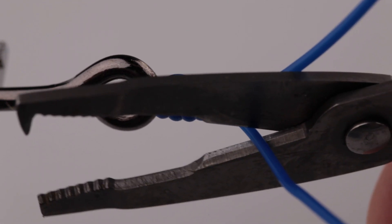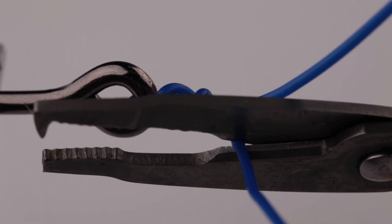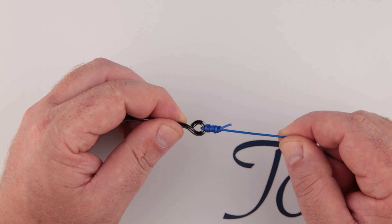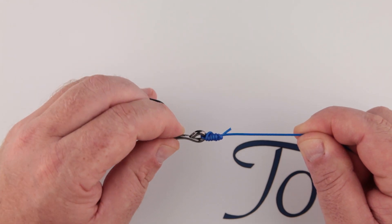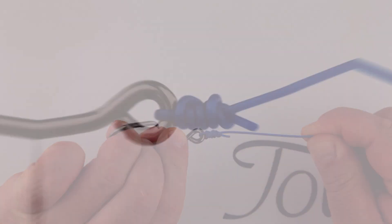Then take a scissors and cut off the tag end. You need to leave about an eighth of an inch or three millimeters to the tag length. So that's it, the pizza knot.